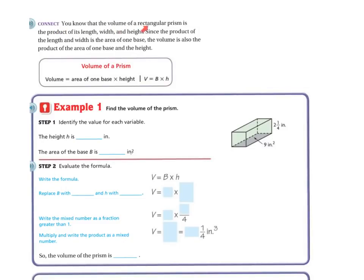Connect. You know that the volume of a rectangular prism is the product of its length, width, and height.